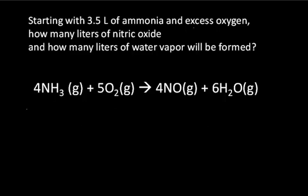Because of our relationship from Avogadro's law, we can also read the equation in terms of volumes: four volumes of ammonia plus five volumes of oxygen will react to form four volumes of nitric oxide and six volumes of water vapor. Knowing we start with 3.5 liters of ammonia and excess oxygen, we can predict the volumes of products formed based on these volume relationships.